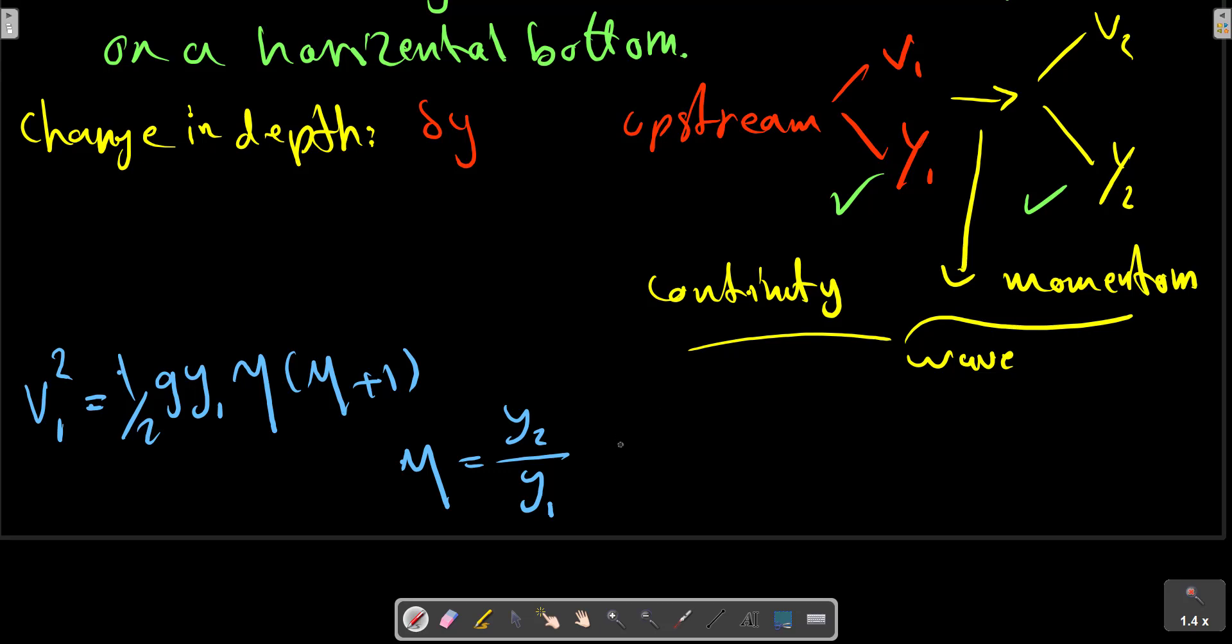Introducing the Froude number and solving this quadratic equation for eta. For the horizontal theory we have this relation to eta and Froude number: velocity squared over g y1.